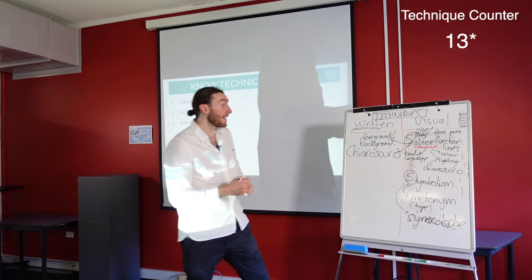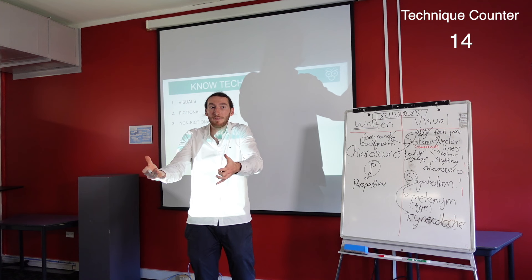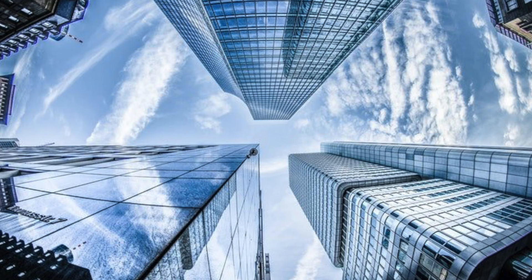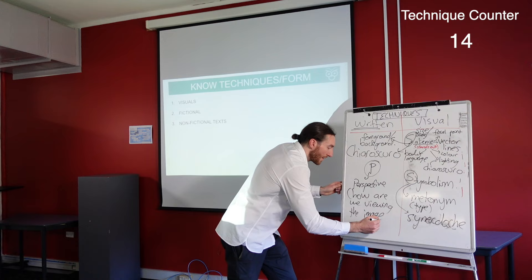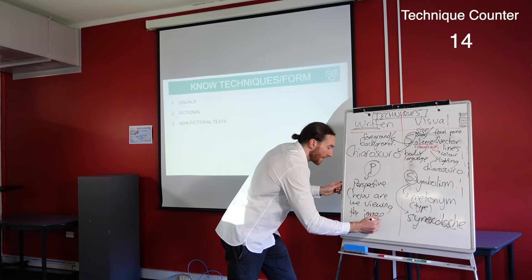And then P — perspective. From whose perspective are we viewing the image? How are we viewing it? Are we outside the image, or are we experiencing it from the point of view of the subject? From what kind of angle or perspective are we looking at the image, and why is that important?